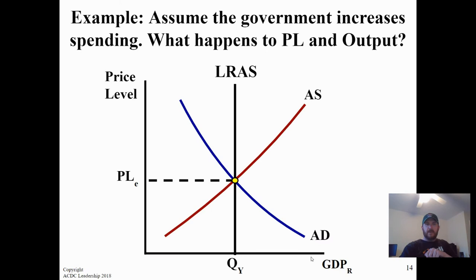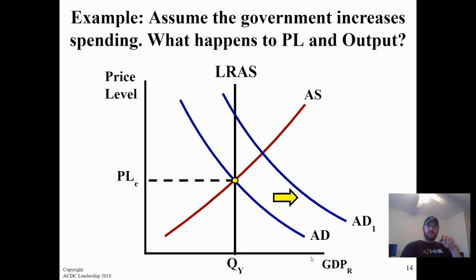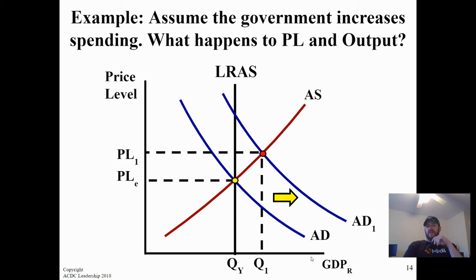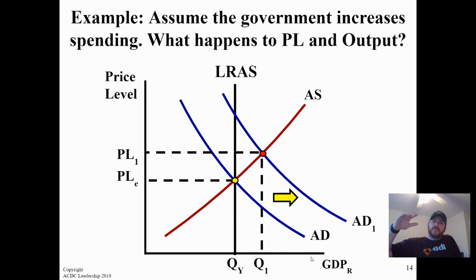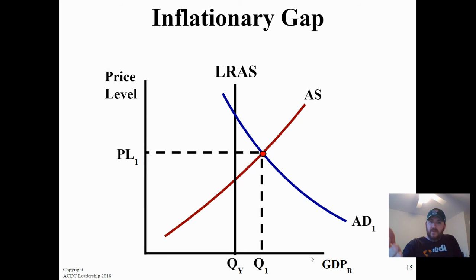If the government increases its spending, government spending is a component of GDP, so aggregate demand is going to increase. Price level and output both rise. Bonus question: unemployment decreases because output has increased beyond potential. This is an inflationary gap — we're producing a quantity beyond our potential with an elevated price level. Write these down and draw these graphs at home.